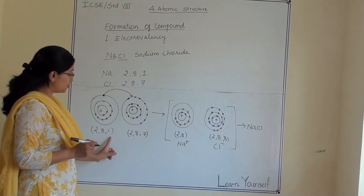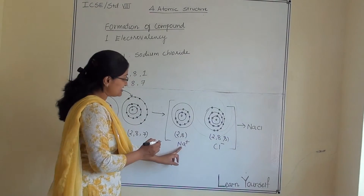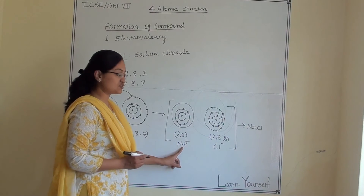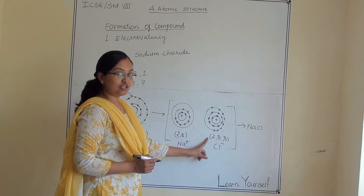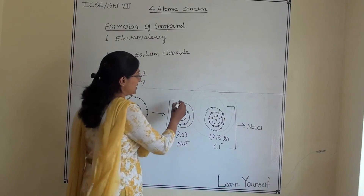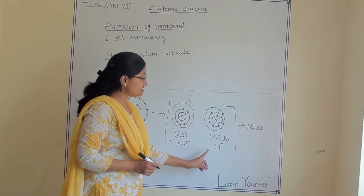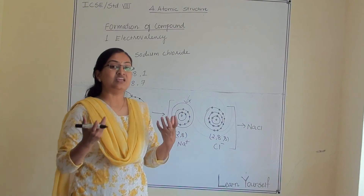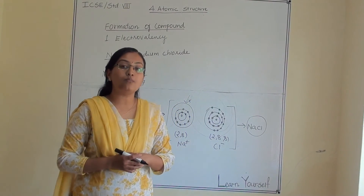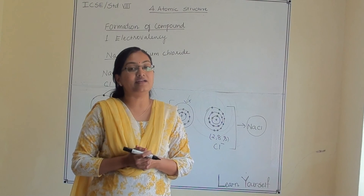When sodium — with configuration 2, 8, 1 — donates 1 electron, its new configuration becomes 2, 8 and it develops a plus one charge. For chlorine, the new electronic configuration becomes 2, 8, 8 — the valence shell now has 8 electrons, and it develops a minus one charge, becoming Cl⁻. So we have Na⁺ and Cl⁻. Since they are oppositely charged, they combine together to form the NaCl compound. NaCl is formed via electron transfer and is therefore known as an electrovalent compound.